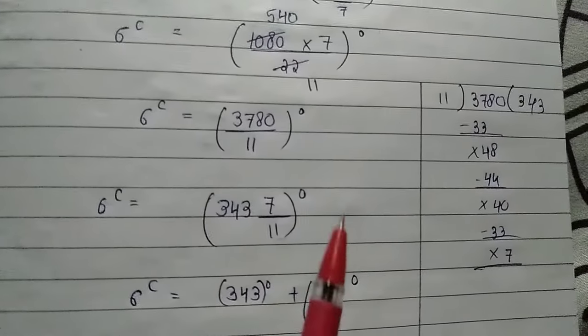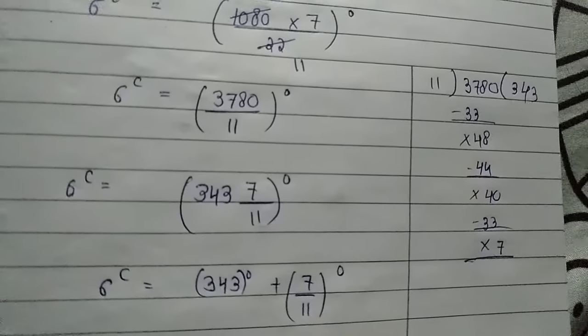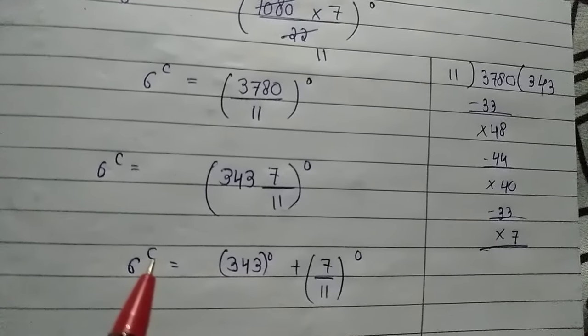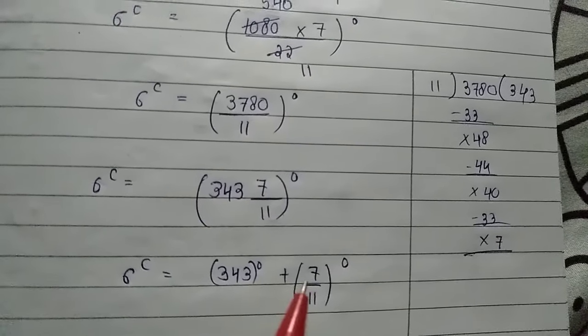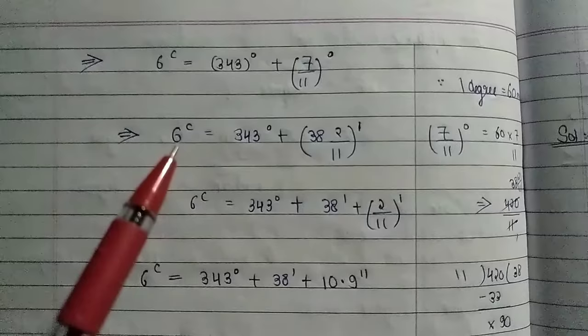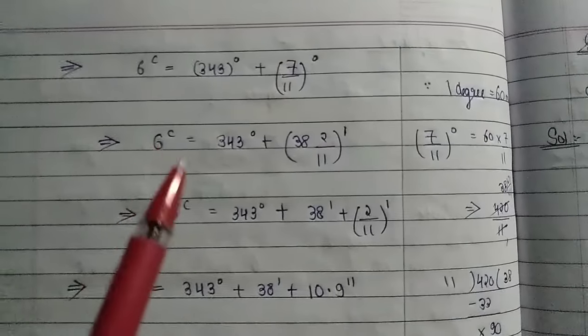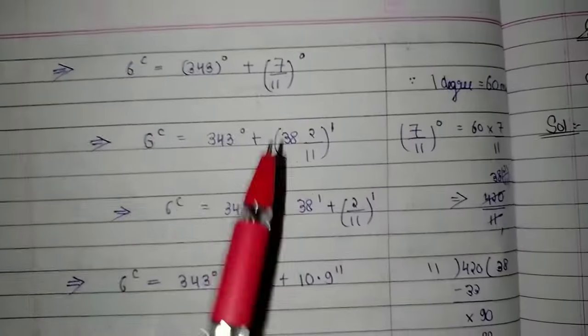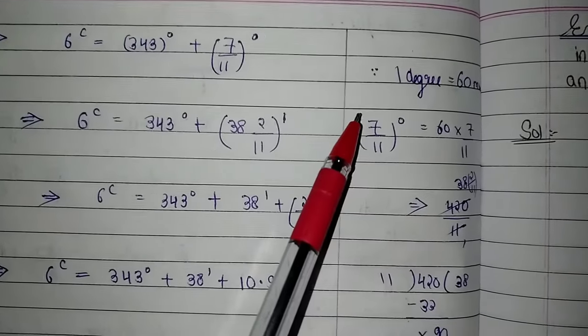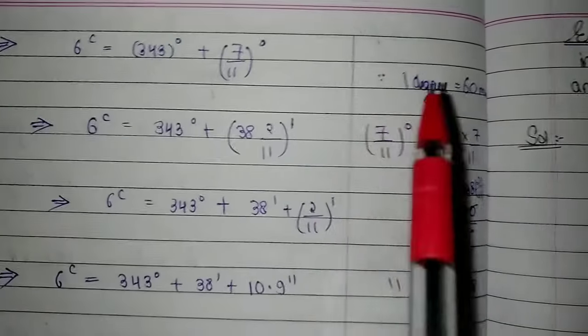This is the whole degree. We can write it separately as 6 radians equals 343 degrees plus 7 upon 11 degree. Here we have 7 upon 11 degree which we need to change into minutes.